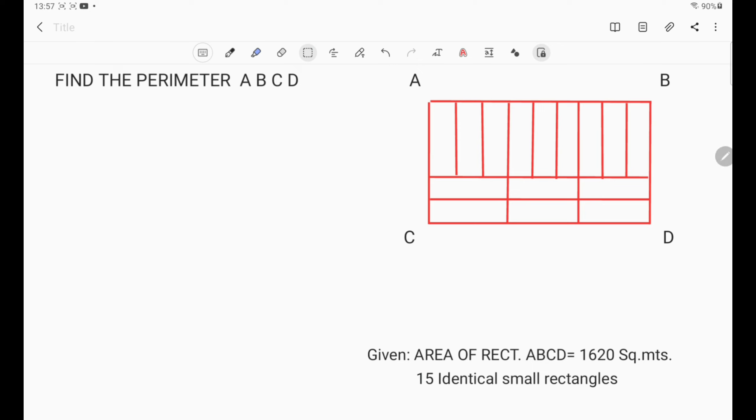This given figure, we are going to solve the rectangle ABCD. The given data are area of rectangle ABCD is equal to 1,620 square meters and 15 identical small rectangles.